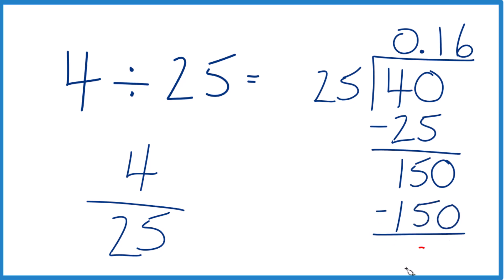Subtract, no remainder. So when we take 4 divided by 25, we end up with the decimal 0.16. That's how you divide 4 by 25 using long division.